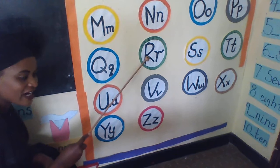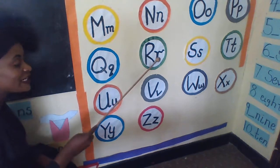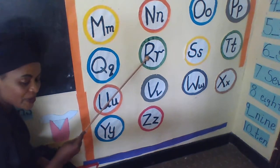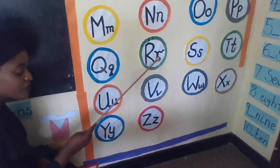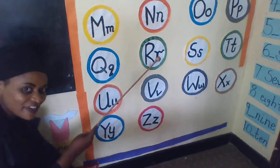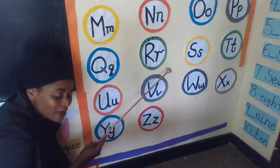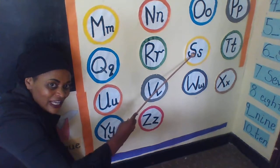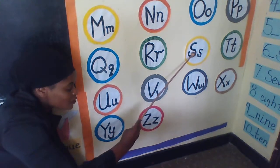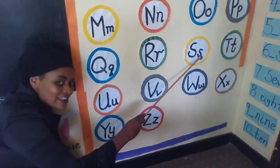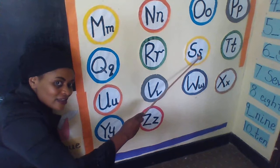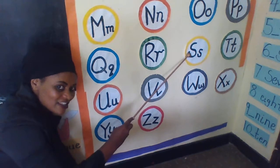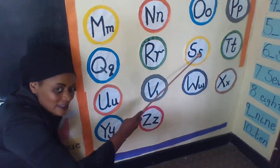Capital letter R, small letter U. Capital letter R, small letter R. Alman, can you try to read this with me? Capital letter S, small letter S. Can you read after me? Capital letter S, small letter S.